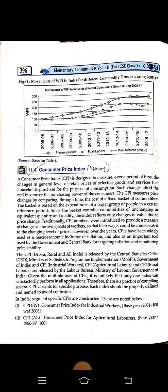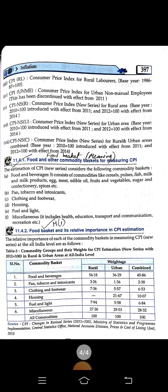For measuring CPI, the new series considers the following commodity basket: Food and Beverages, which includes commodities like cereals, pulses, fish, milk and milk products, eggs, meat, edible oil, fruits, vegetables, sugar, spices, etc. Also included are paan, tobacco and intoxicants, household items, fuel and light, clothing and footwear, and many others like health, education, transport, and communication.